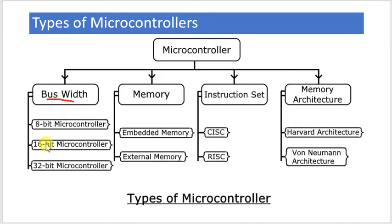When the microcontroller has a higher number of bits or wider bus width, it can process faster. The 32-bit microcontroller is more powerful compared to the 8-bit microcontroller. We have to study the 8051 microcontroller in our syllabus, which is an 8-bit microcontroller.